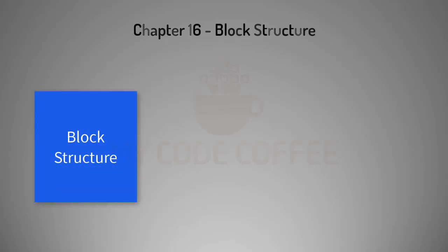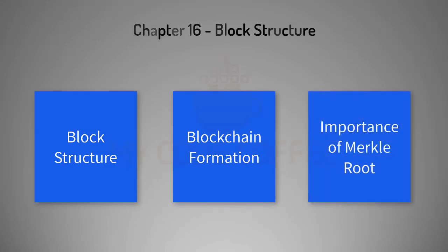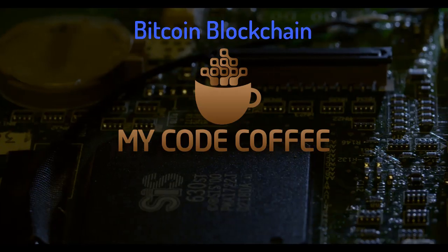By the end of this chapter you will understand the structure of each block in the blockchain, how blocks connect to form a blockchain, and how Merkle Root ensures that you cannot alter a transaction in a block without altering all subsequent blocks. So let's start.